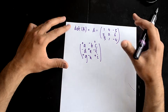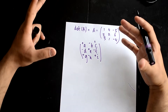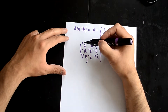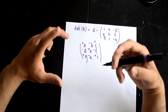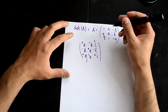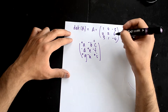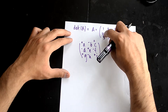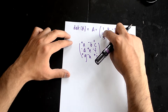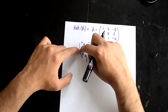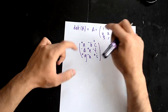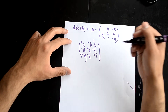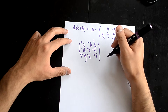Each number in the matrix has this sign pattern acting on it. So even if, let's say, this was a negative 2, then it's a negative sign acting on it, so it would turn into a positive 2. You need to remember this for later on.